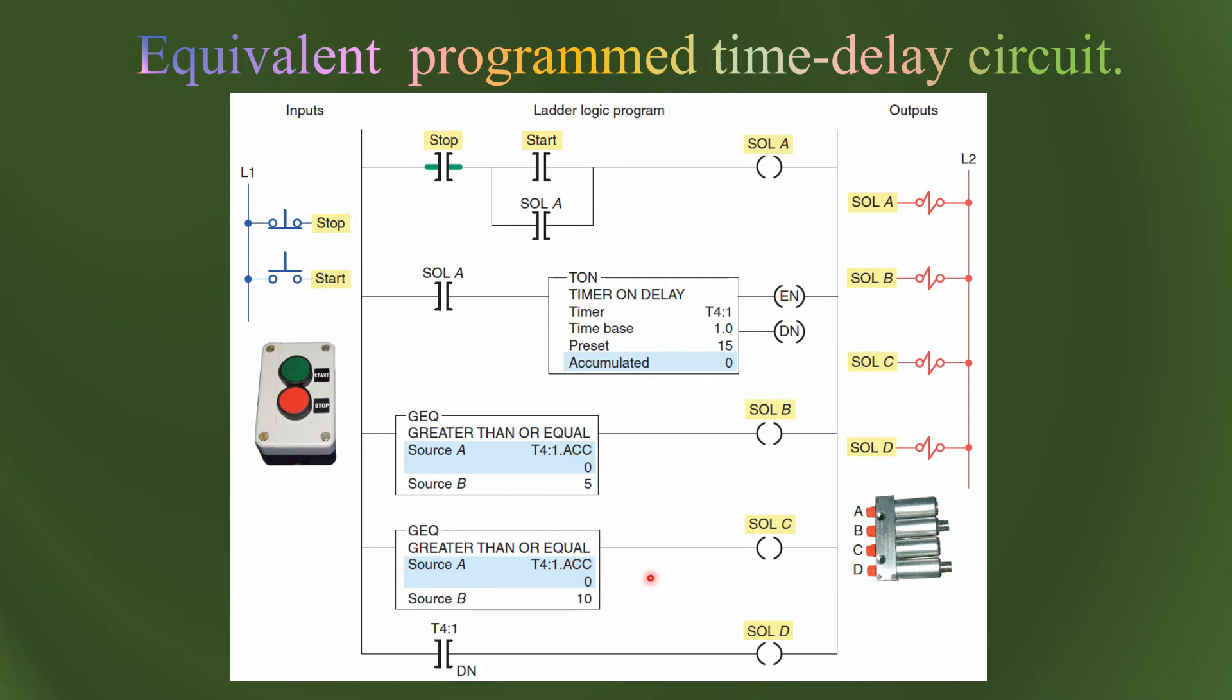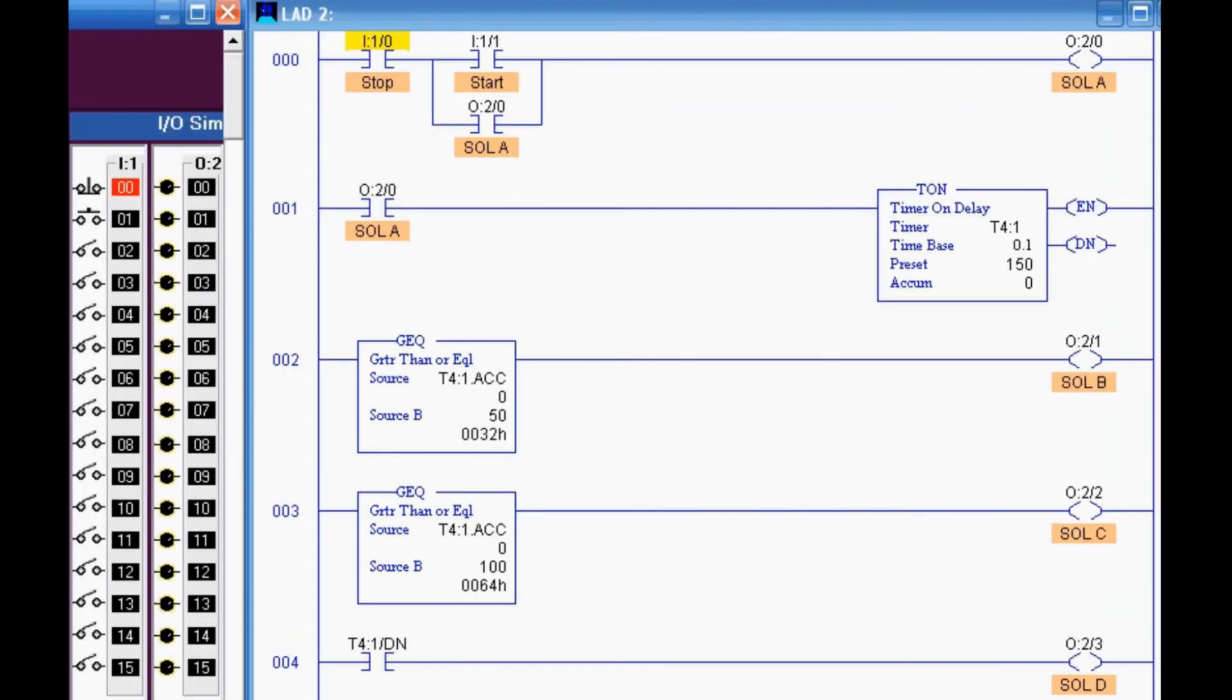This is the simulation of the program we just discussed. You can see here the same program. As soon as we press here, this solenoid becomes on. The time base is 0.1, so after 50 this one will turn on, after 100 this one will turn on, and after 150 this solenoid will become on. They will remain on for the full time. So this also becomes on. Now this is on.